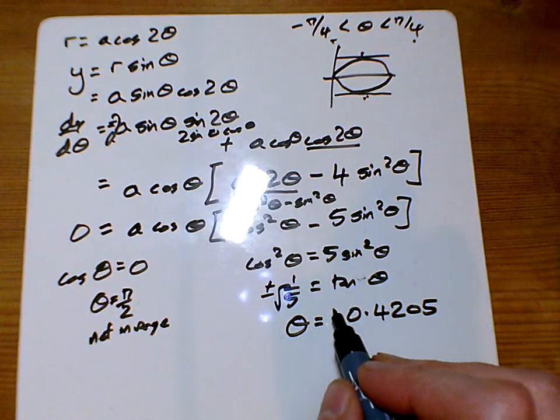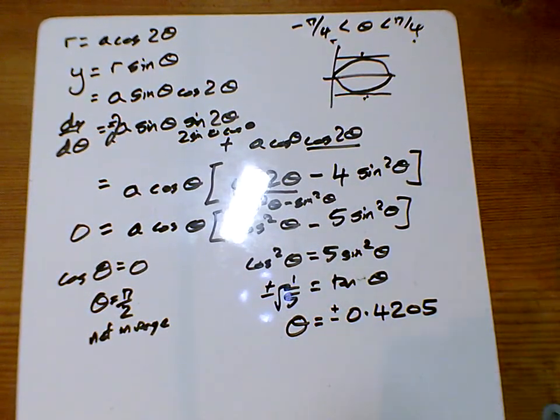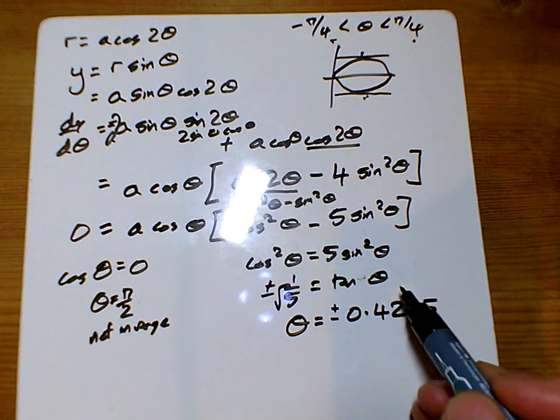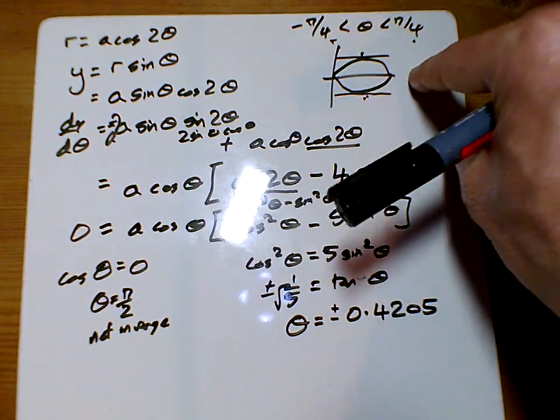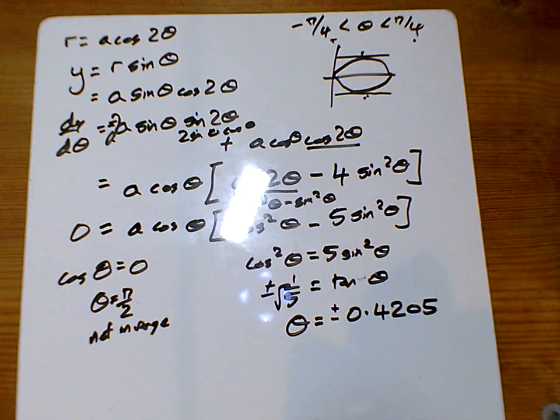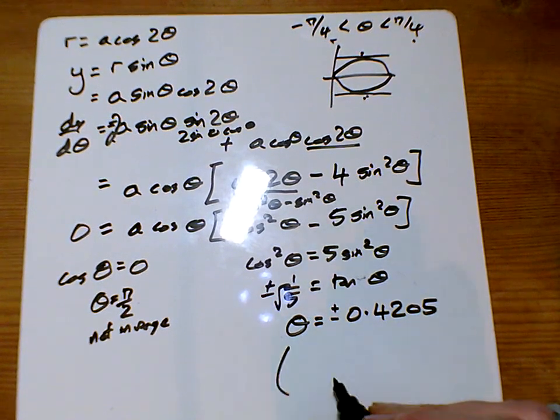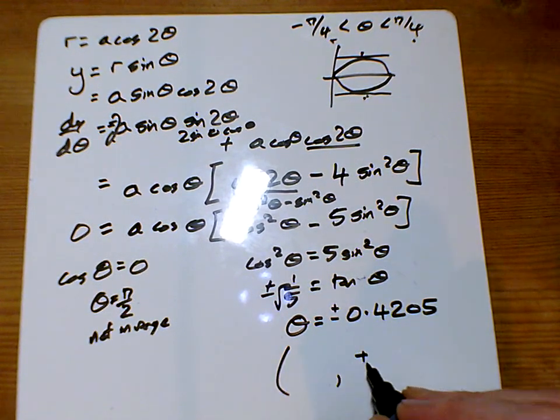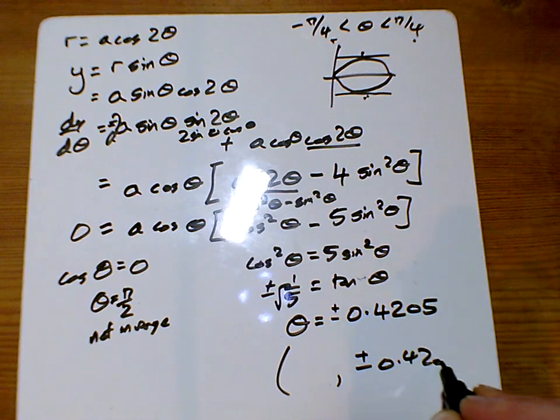So this is plus or minus. Yeah, so you see a live error going on there. I should have square rooted, taken a plus or minus. But luckily, I've drawn the picture already. So I could see I'd gone wrong. Right, so what point have we got here then? So we've got plus or minus 0.4205.